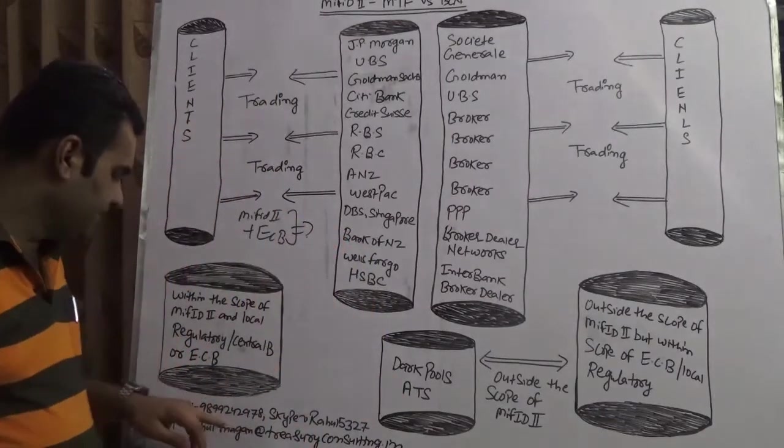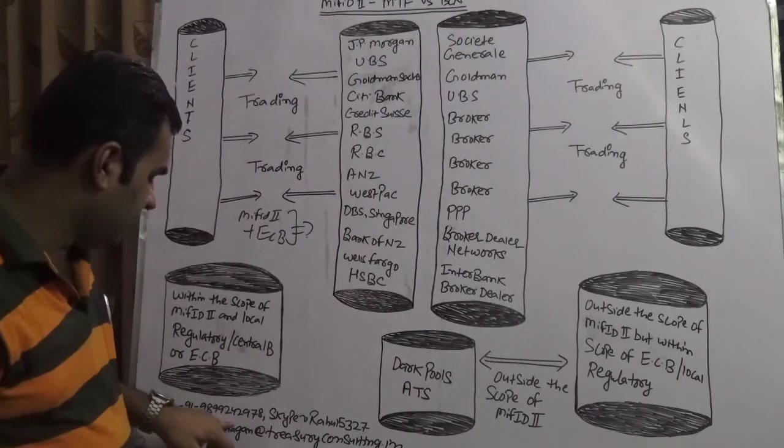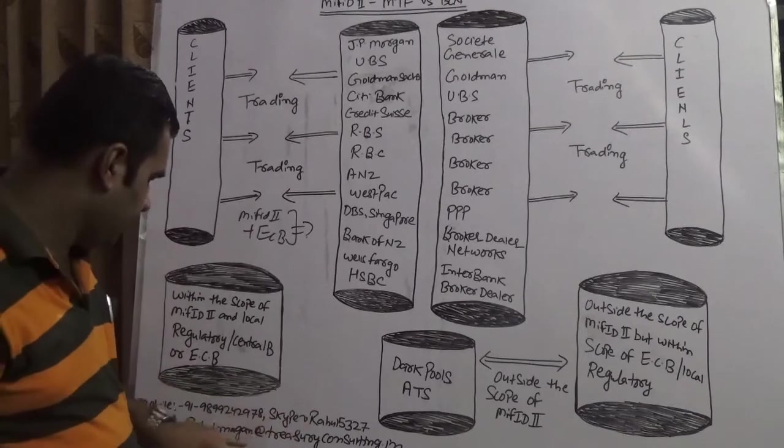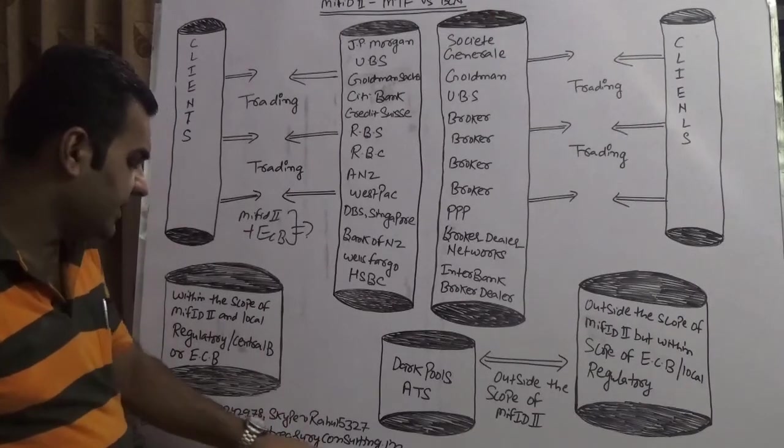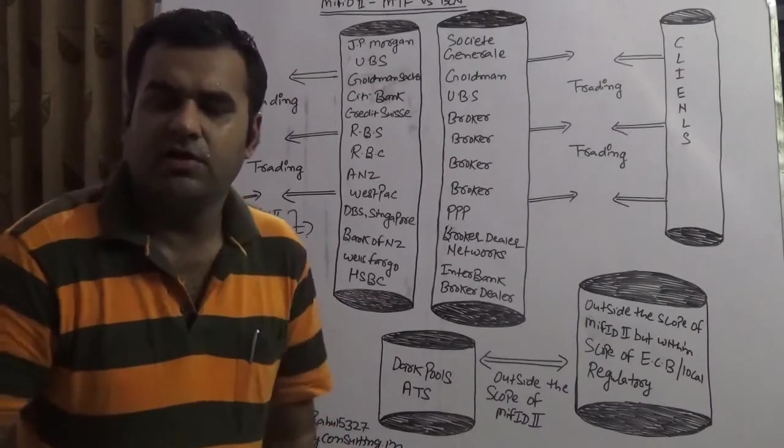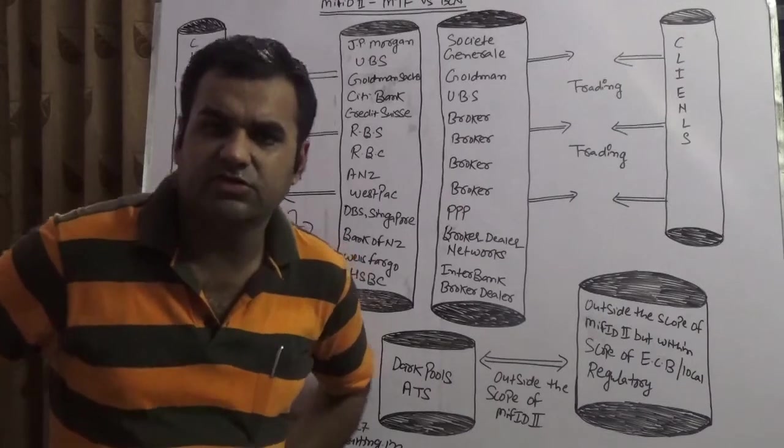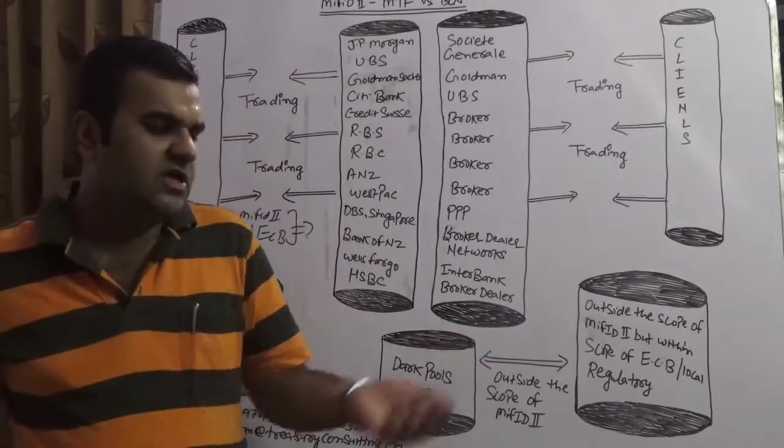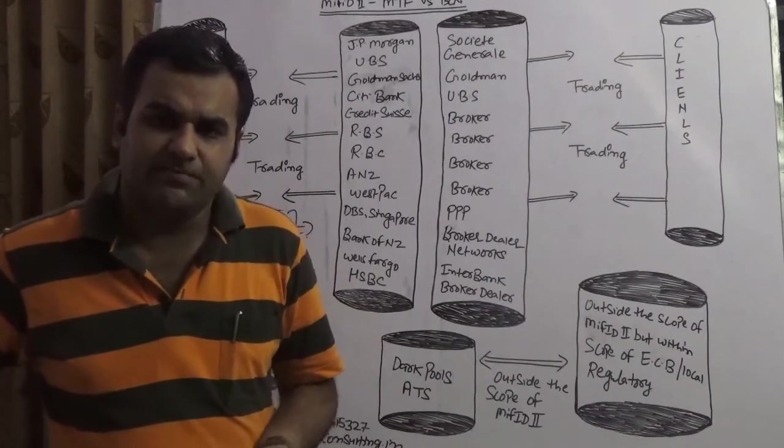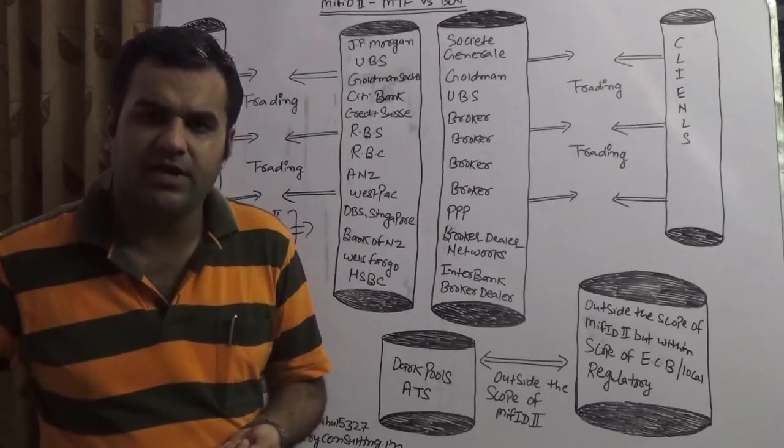In case you do have any questions, you're welcome to call me at 98 double N 2429 78 while my Skype ID is R5327. My email is rahul.bhagan at treasury consulting dot in. Do remember that MIFID 2nd is on the way. Treasury Consulting LLP is completely set. We are launching our videos on our fixed income platform roughly by 31st October. It's also covering MIFID 2nd. If you have any query, contact us. Thank you and have a wonderful time.